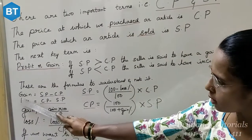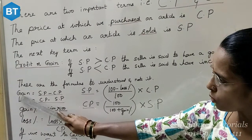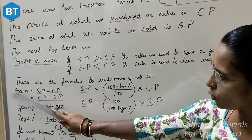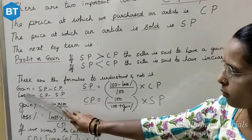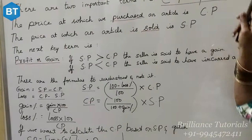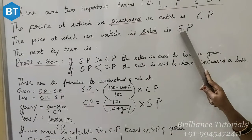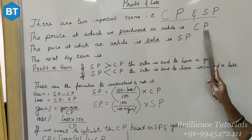The first thing is if they have asked us to find out the gain. What is the formula for that? To find out the gain, we have to subtract the cost price from the selling price.